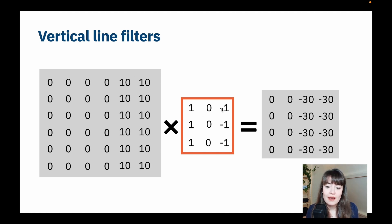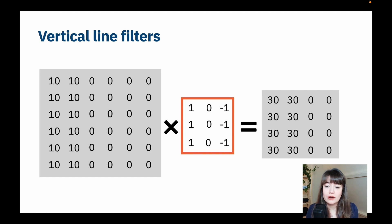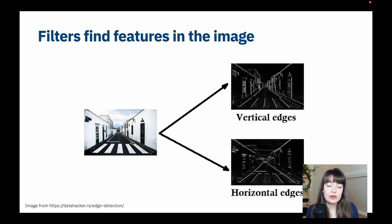And here is what it will look like on an actual image. So this is the original image that we have. And if we apply a filter to it that recognizes vertical edges, this is what we get as a resulting matrix. And this is what we get as a resulting matrix if we apply the filter to it that recognizes the horizontal edges.